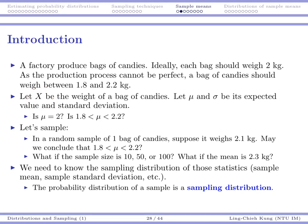Suppose I take X as the weight of a bag of candy. I know it's somewhat random, so I probably want to understand this process. Then I have capital X, let's say mu and sigma as its expected value and standard deviation. Then probably I want to ask a few questions like, is mu equal to 2? In that case, my process is good. Or is mu within 1.8 and 2.2? In that case, my process is also considered good.